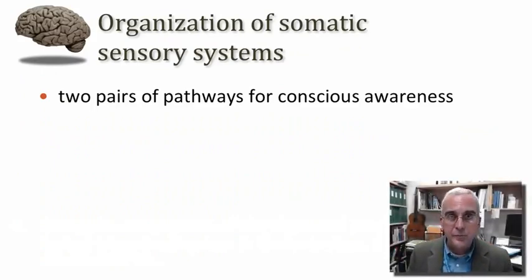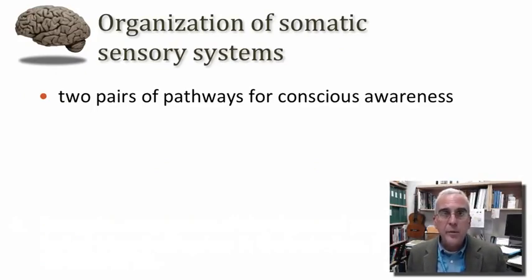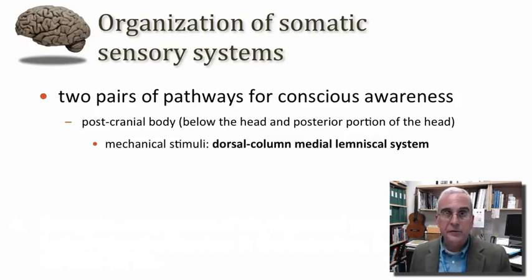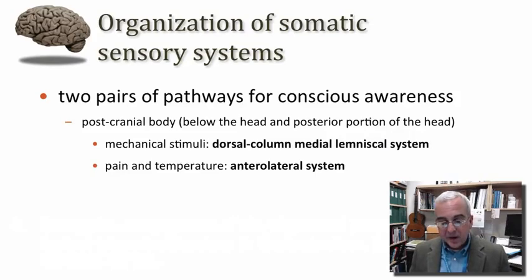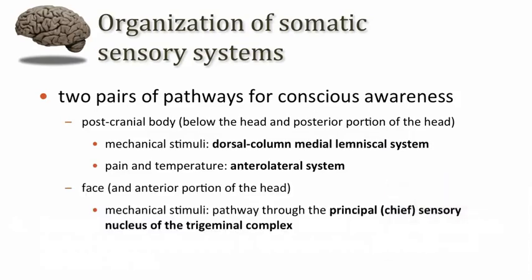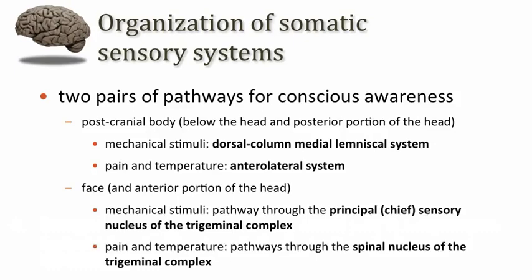I'll remind you of the broad organization of our somatic sensory pathways. We have two pairs of pathways. One pair serves the postcranial body; one pair serves the anterior cranium, namely the face. For the postcranial body — below the head and including the posterior portion of the head — there's the dorsal column medial lemniscal pathway for mechanosensation. What we're going to talk about in this session is the anterolateral system, the pain and temperature pathway for the postcranial body. For the face, the mechanosensory pathway runs through the chief or principal sensory nucleus of the trigeminal complex, while the pain and temperature pathway runs through an inferior division called the spinal trigeminal nucleus.